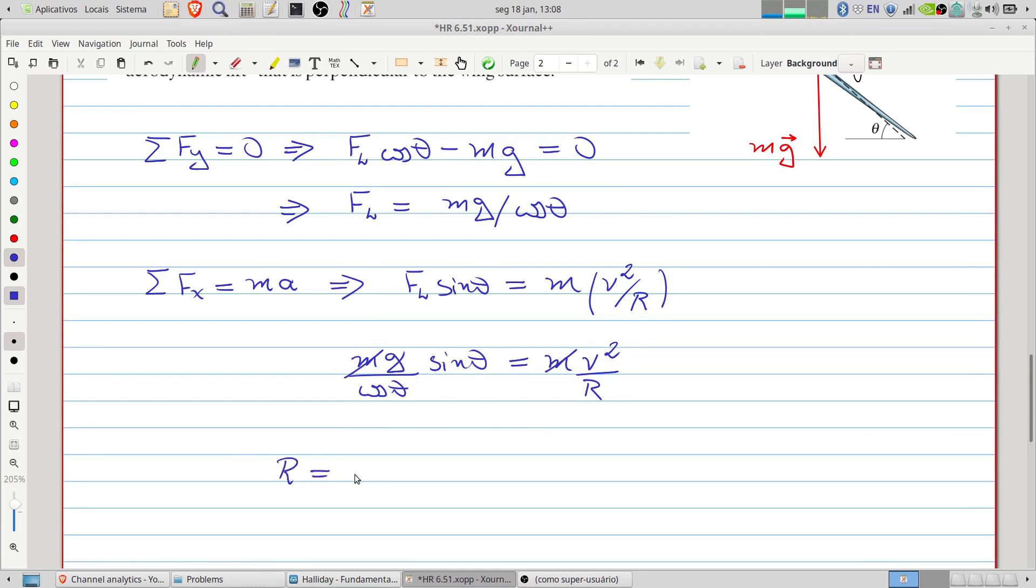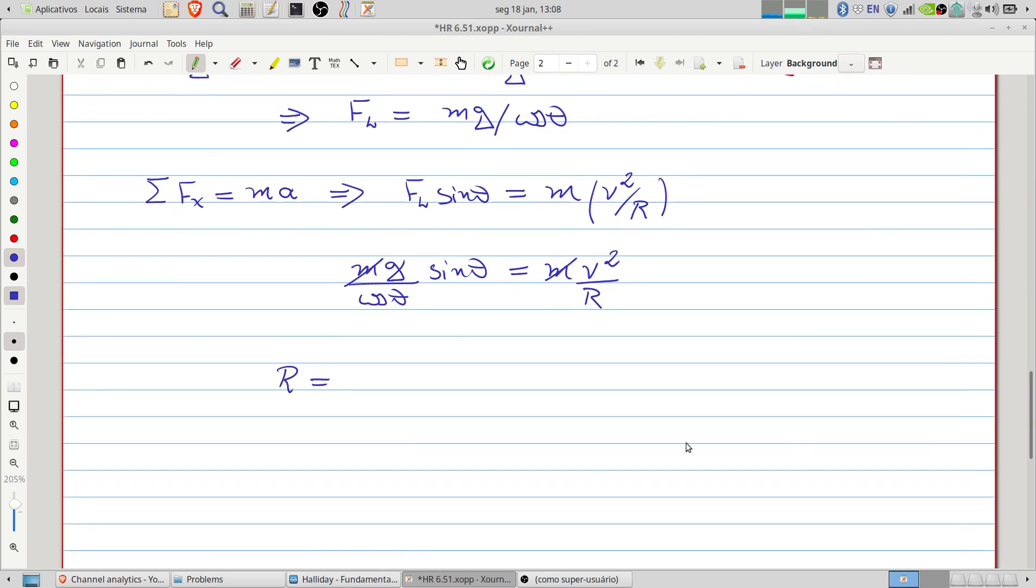The radius will be v squared. Here we have sine divided by cosine, that is tangent. So we have g tangent of theta. This is the solution of the problem.